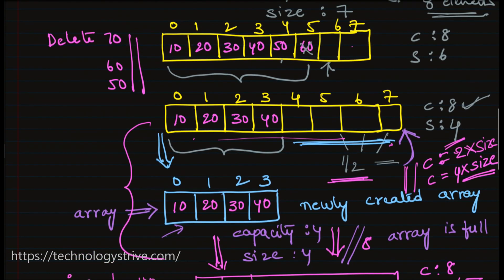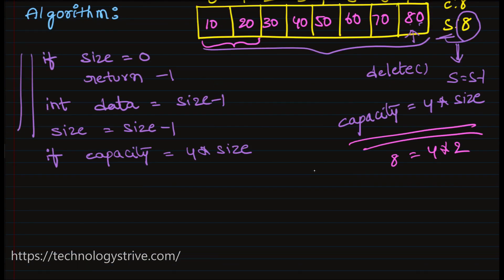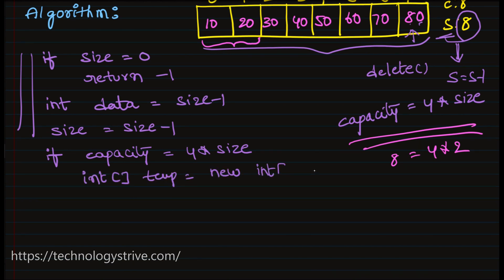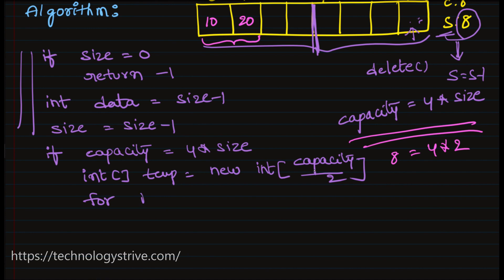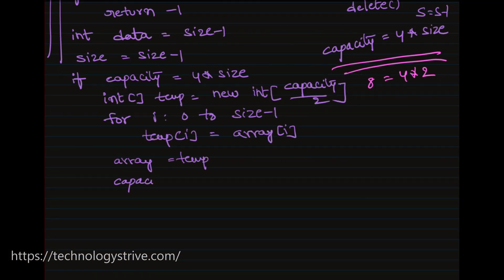Next, we want to shrink the array size. We arrive at the shrink condition when capacity equals 4 times size — for example, capacity is 8 and only 2 elements remain. If capacity equals 4 times size, we create a new array with capacity divided by 2. Then we copy elements from index 0 to size minus 1 into the new array. Once done, we update the array reference: array equals the new array. Finally, we update the capacity variable: capacity equals capacity divided by 2.